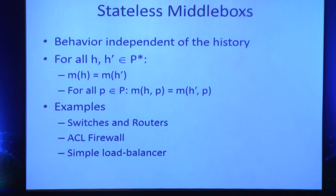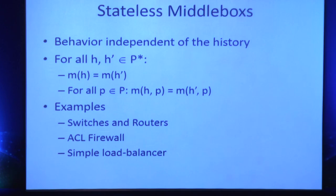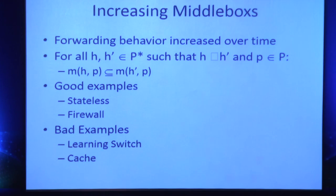A stateless middle box does not depend on history. Examples include switches and simple firewalls with a fixed rule table. A simple load balancer that forwards purely based on IP address is also stateless. The second class is increasing middle boxes — as we saw with the stateful firewall, the forwarding behavior increases over time: every time messages are sent from the trusted to the untrusted side, that untrusted host becomes trusted.